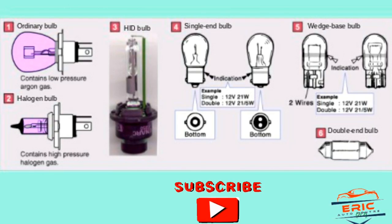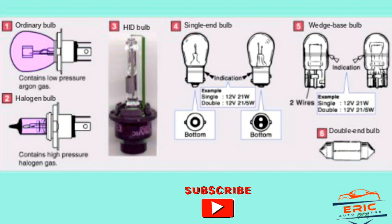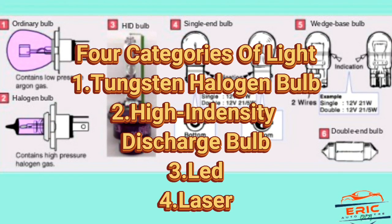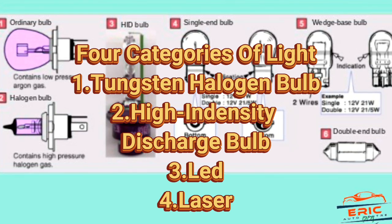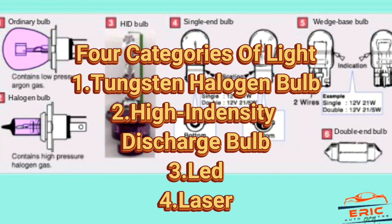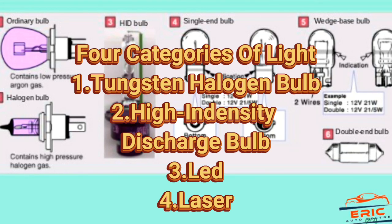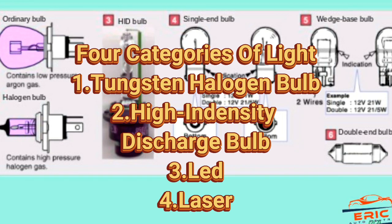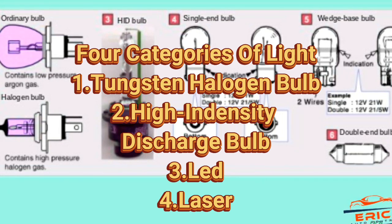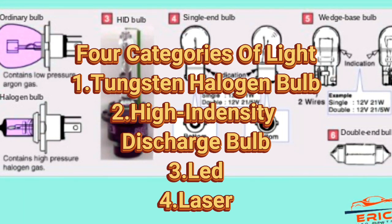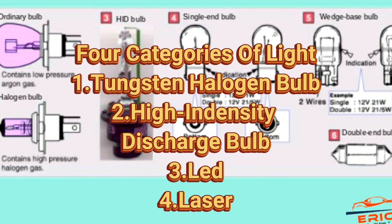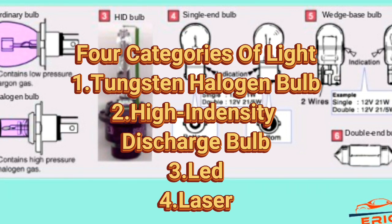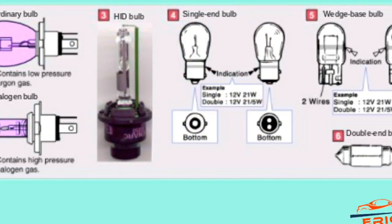Hello guys, welcome to my channel. This is Helicopter Center, the home of auto tips. In today's tutorial, I'm going to show you four categories of light we use on vehicles and how they work. Over there we have halogen bulbs, high-intensity discharge bulbs, LED, and laser bulbs. These are the bulbs that we use on a car, and in the diagram below you have a lot of bulbs categorized and how they work.